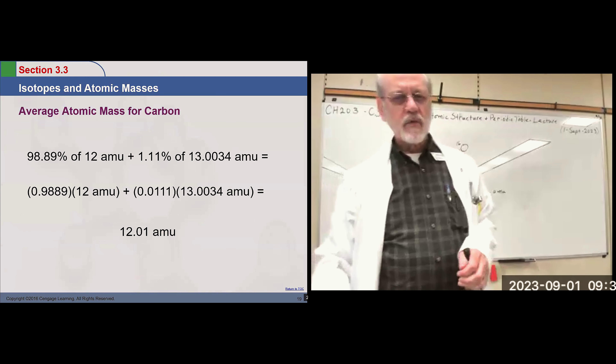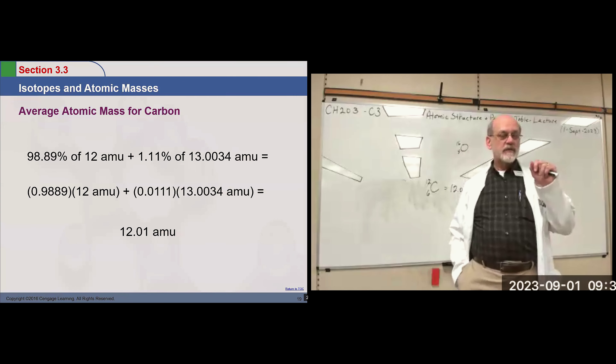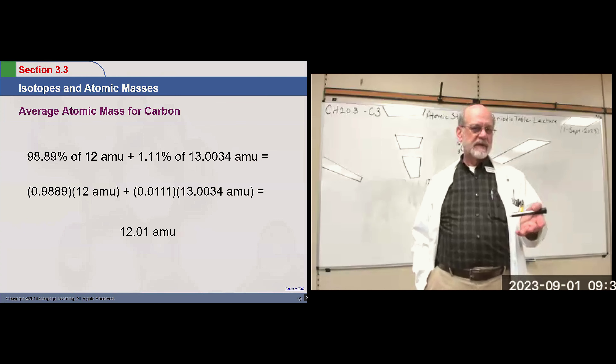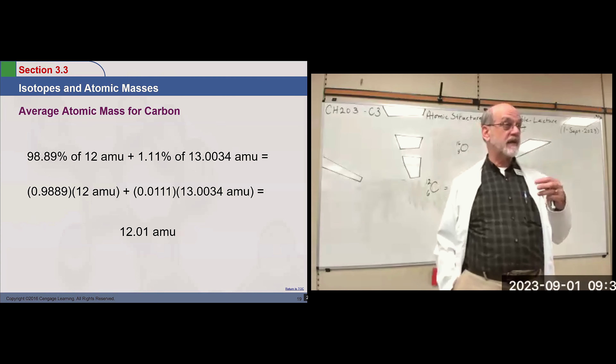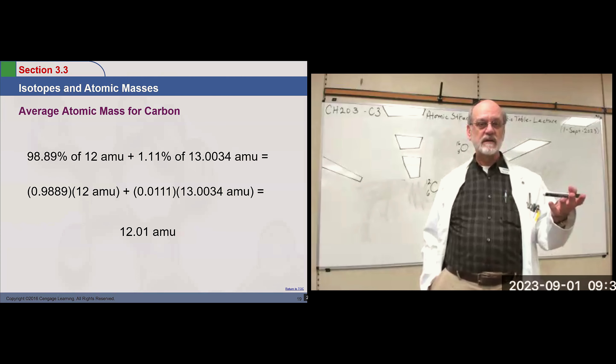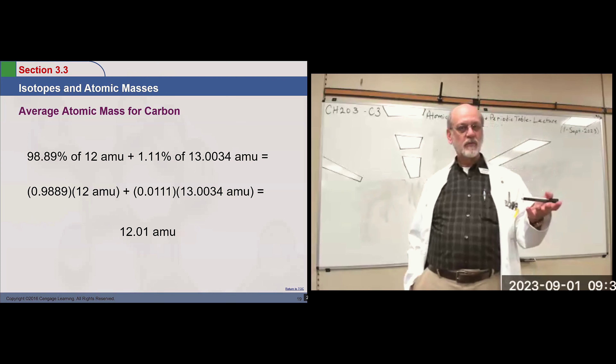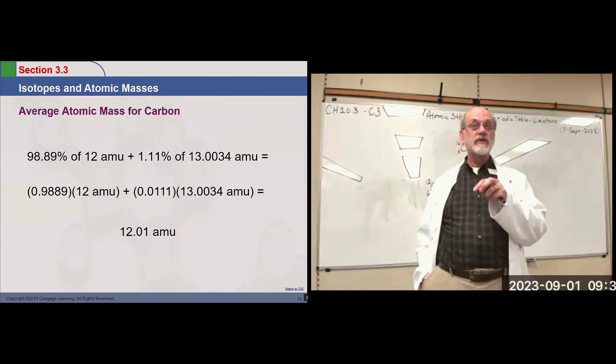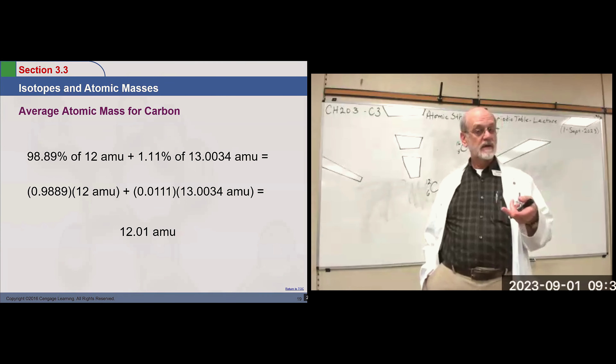For the calculation: 98% of the mass value comes from 12 atomic mass units from carbon-12. You multiply the fractional equivalent of percent — 0.9889 — times 12, plus 0.0111 times 13.0034 atomic mass units for carbon-13. The true value of carbon-13's mass is 13.0034 atomic mass units. It only contributes a very small amount, but it's enough so that the average atomic mass of carbon comes out to 12.01.